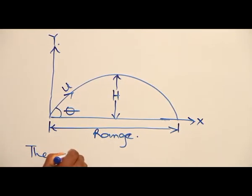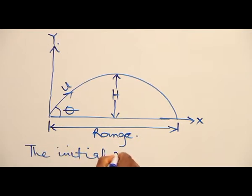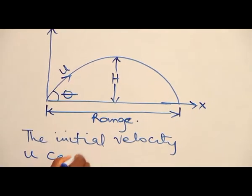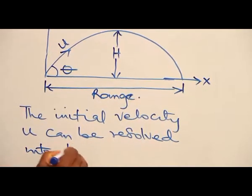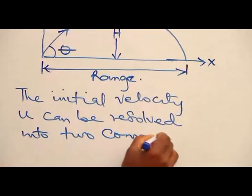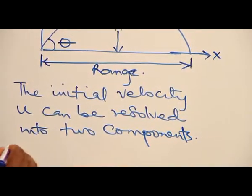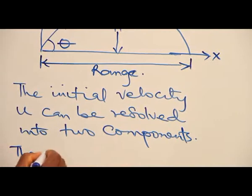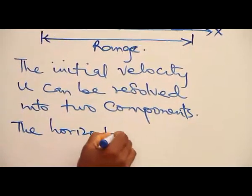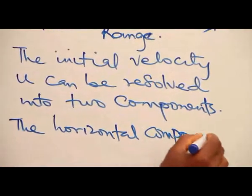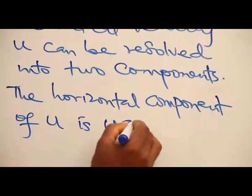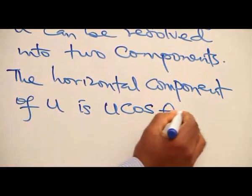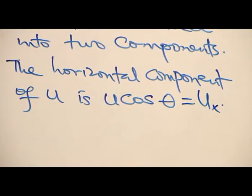The initial velocity u can be resolved into two components. The horizontal component of u is u cos theta. This is the x part of it.